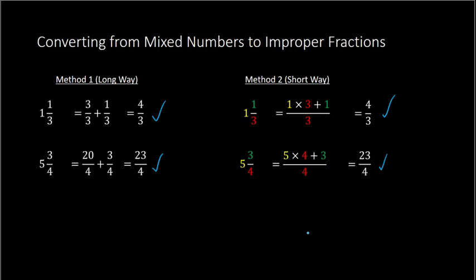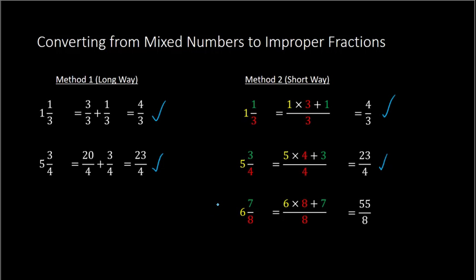Let's try one more example: 6 and 7 eighths. The denominator is 8. For the numerator, we take 6 times 8 plus 7: 48 plus 7 equals 55. So the solution is 55 over 8. In this lesson, we have learned how to work with proper and improper fractions, as well as converting between mixed numbers and improper fractions. That concludes our lesson for today.